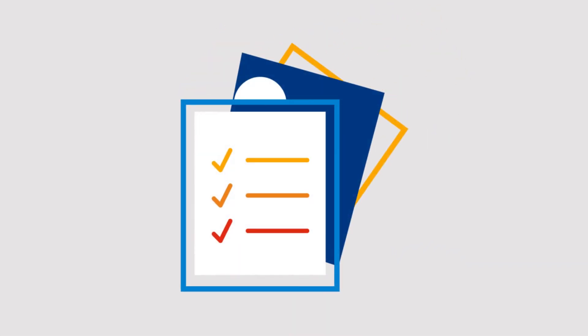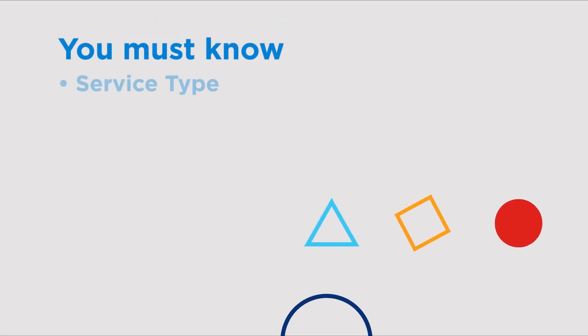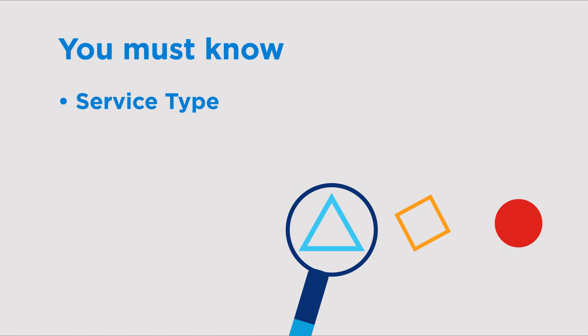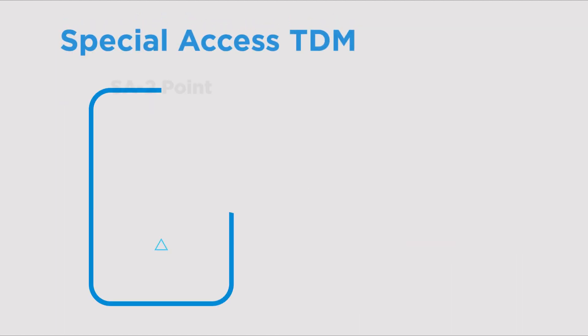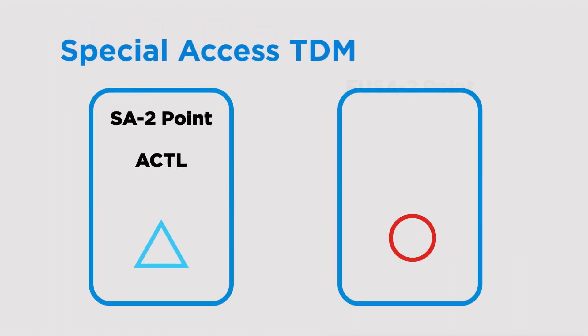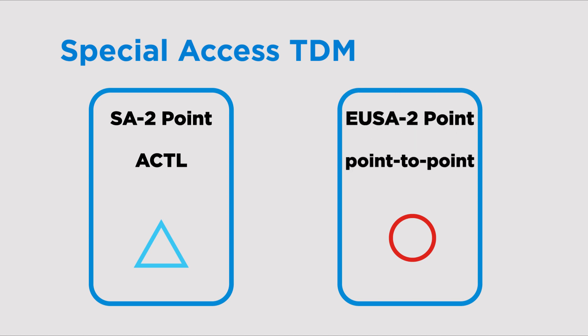Next, there is some information you will need before initiating the order. First, you need to know the service type of the circuit you want to disconnect. Special access TDM comes in two flavors: SA2 point for those coming off an Actyl, and EUSA2 point for point-to-point.